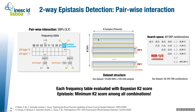The frequency table counts the number of cases and controls in the dataset for each genotype combination. Since the data is binarized, we can do this with simple logic operations: AND the two genotype vectors together and also AND with the phenotype vector. Applying a POPCNT instruction tells us how many patients have the disease for those two SNPs and that genotype combination. For controls (phenotype 0), we do the same but with a NOT-complemented phenotype vector.